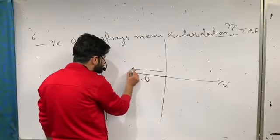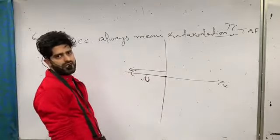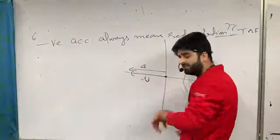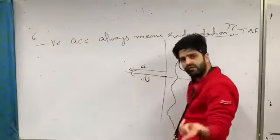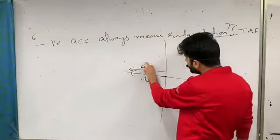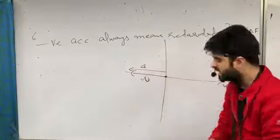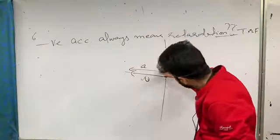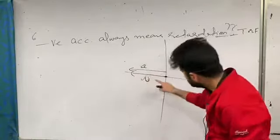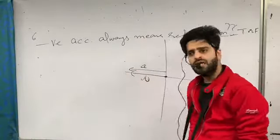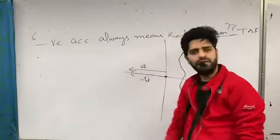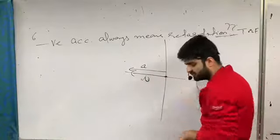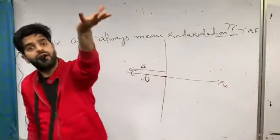If the acceleration is also towards the left, then the acceleration is also negative. The initial velocity is negative and acceleration is also negative, but the direction of acceleration and velocity are the same — both leftward. This means the velocity magnitude will increase.